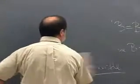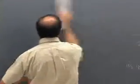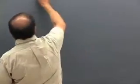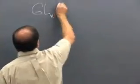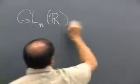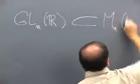This vector space of n by n matrices is not what we're really interested in. We're interested in a subset that I'm going to call GLN of R, which is a subset of all n by n matrices over R.